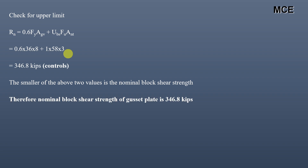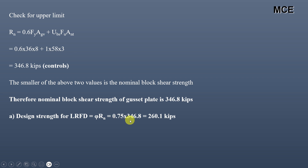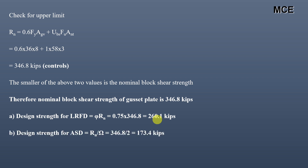For LRFD, design strength = φRn = 0.75 × 346.8 = 260.1 kips. For ASD, allowable strength = Rn/Ω = 346.8/2 = 173.4 kips. This is how you find the design and allowable strength for block shear failure in welded connections.